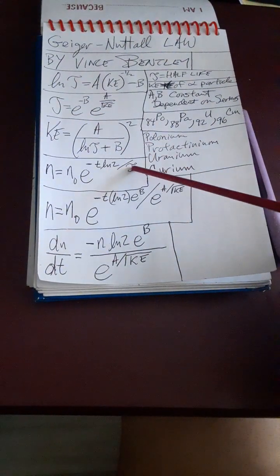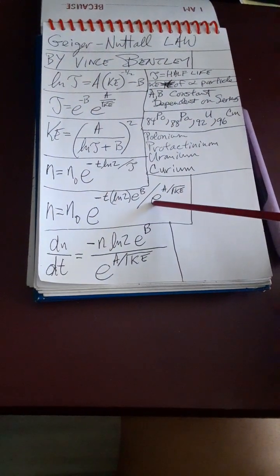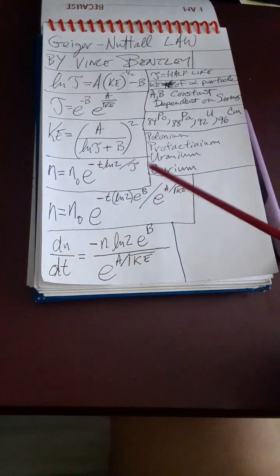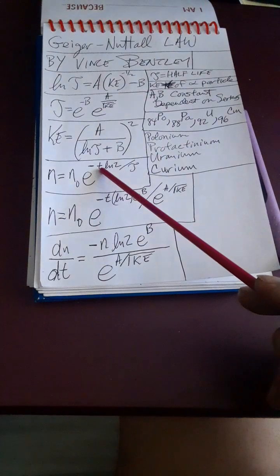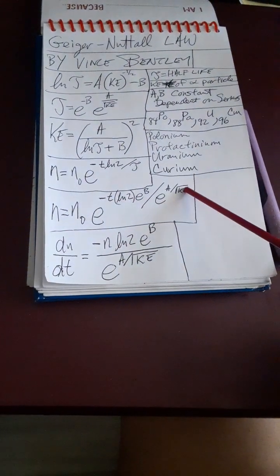So what's interesting that we can do is, right here for the half-life, we can plug this in, the Geiger-Nuttall formula in here, and we can get a new formula that's dependent on two variables this time. This one was only dependent on time, but this one is going to be dependent on time and the kinetic energy of the alpha particle.